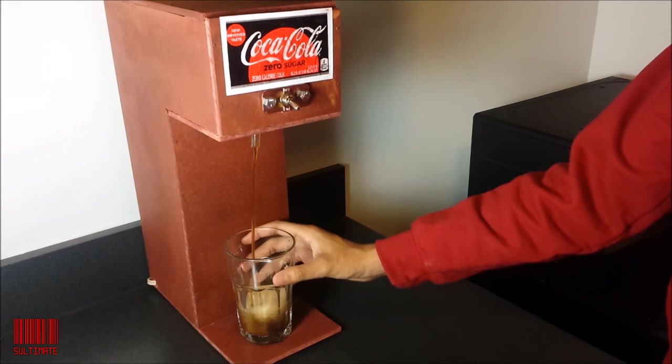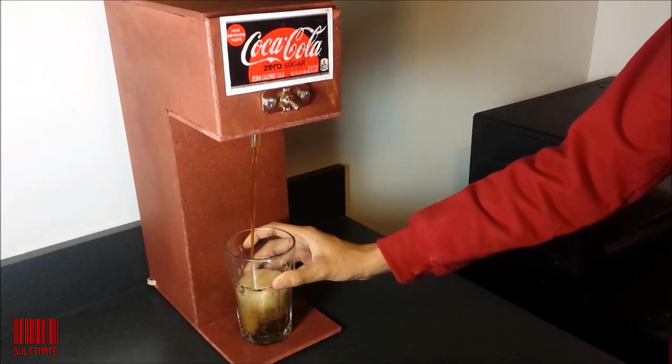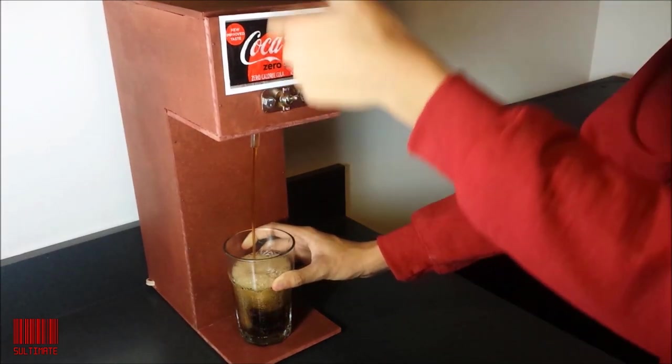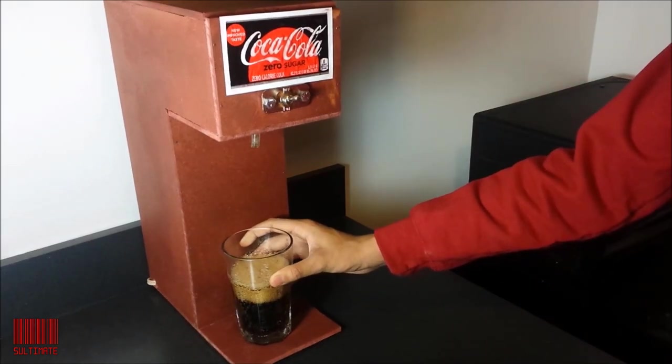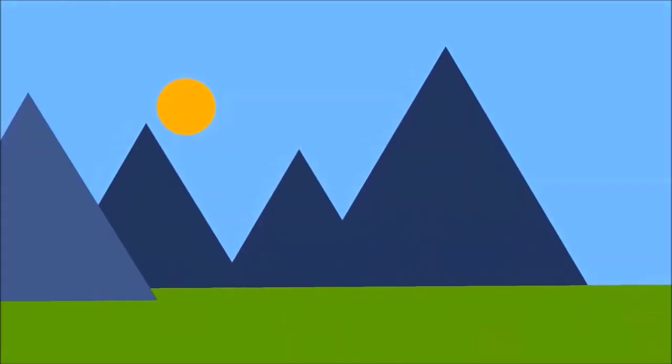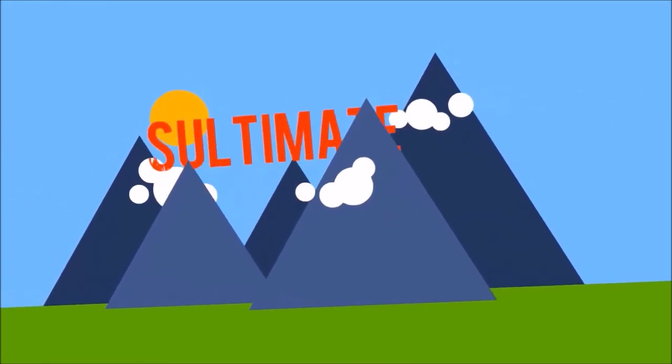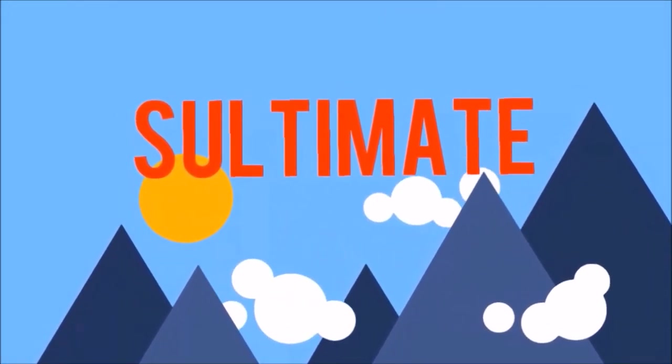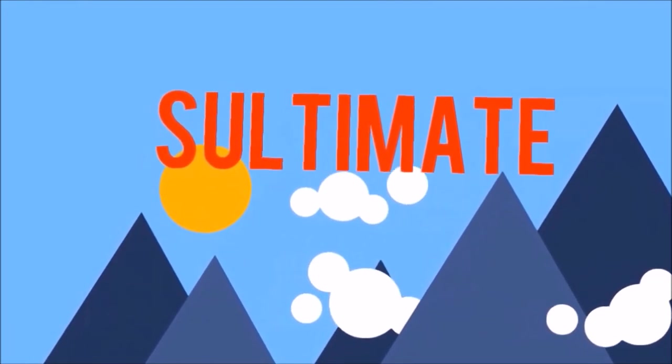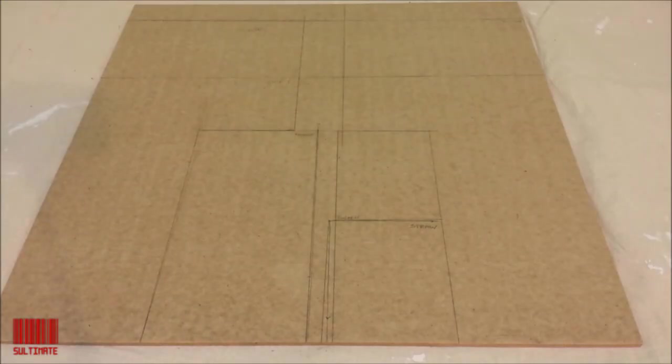What's up guys, it's Sultimate here and today we're going to be creating a soda dispenser. I purchased a two feet by two feet MDF board, which is a sturdy piece of engineered wood made by breaking hardwood or softwood into wood fibers and later compressed. You can use natural wood, but this MDF board is a lot cheaper and lighter.